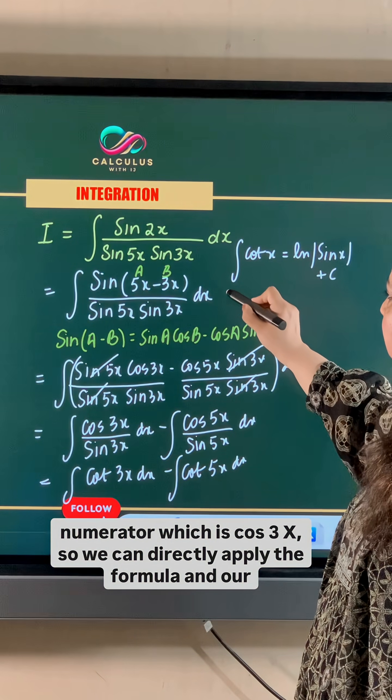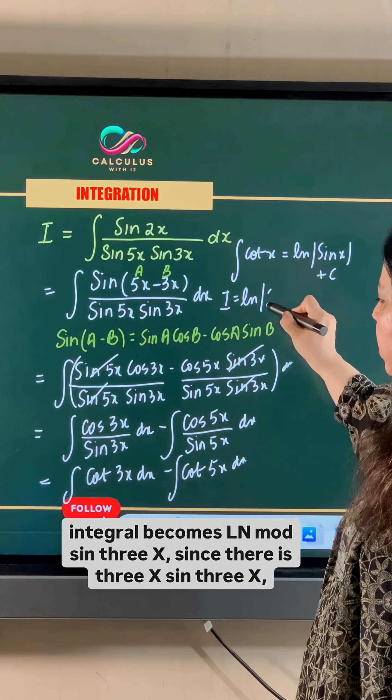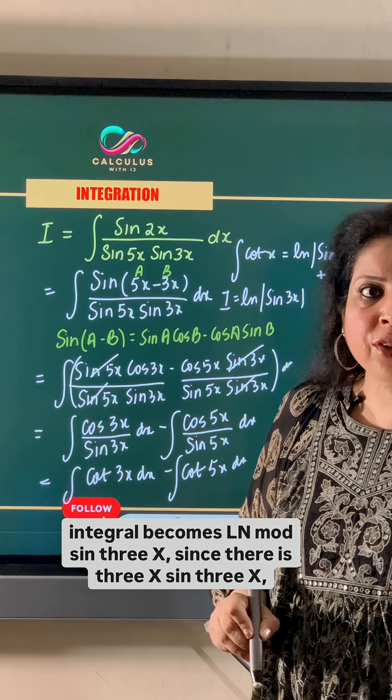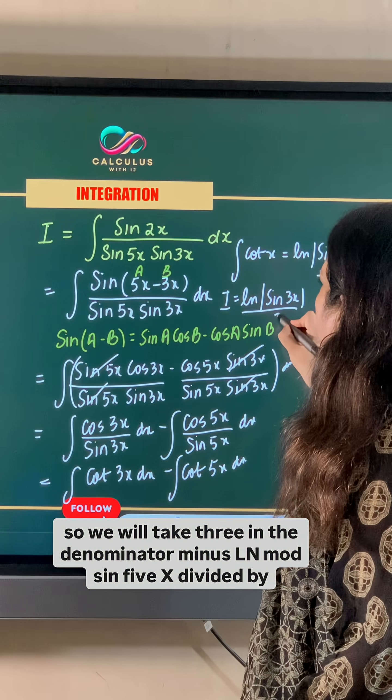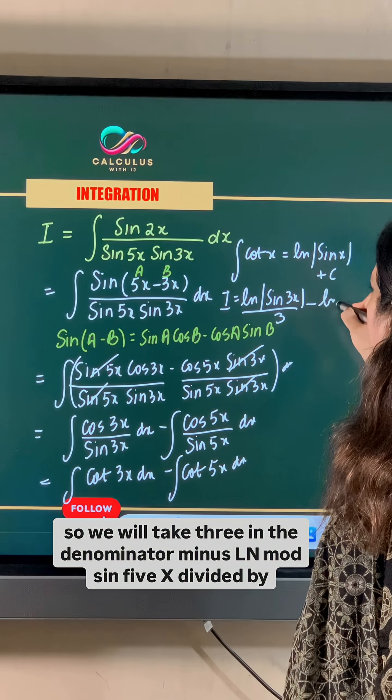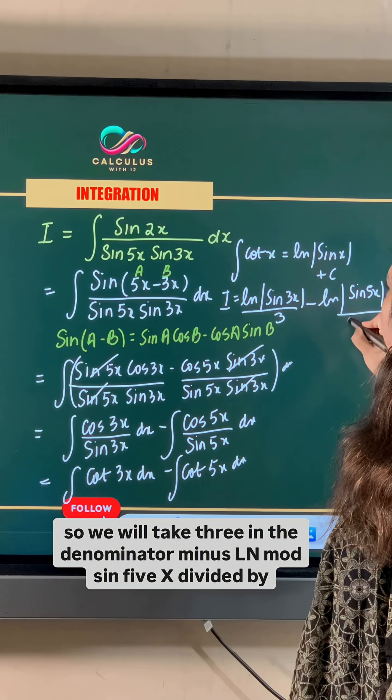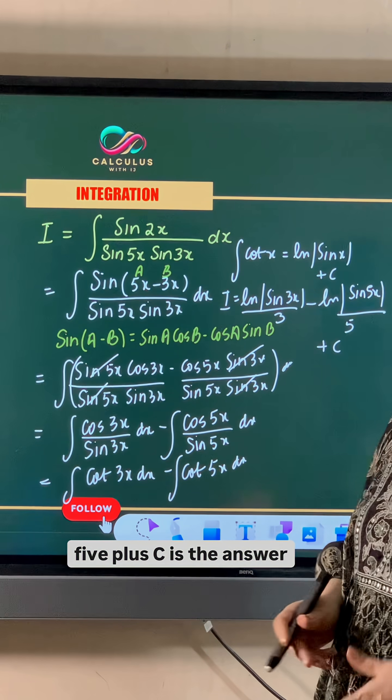Our integral becomes ln modulus sin 3x. Since there is 3x in sin 3x, we will take 3 in the denominator, minus ln modulus sin 5x divided by 5, plus C is the answer.